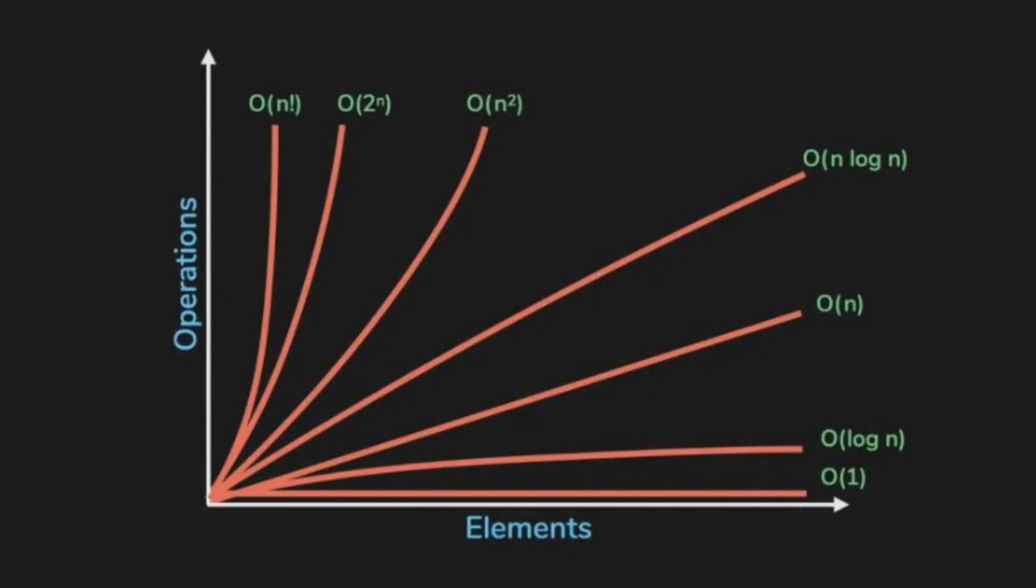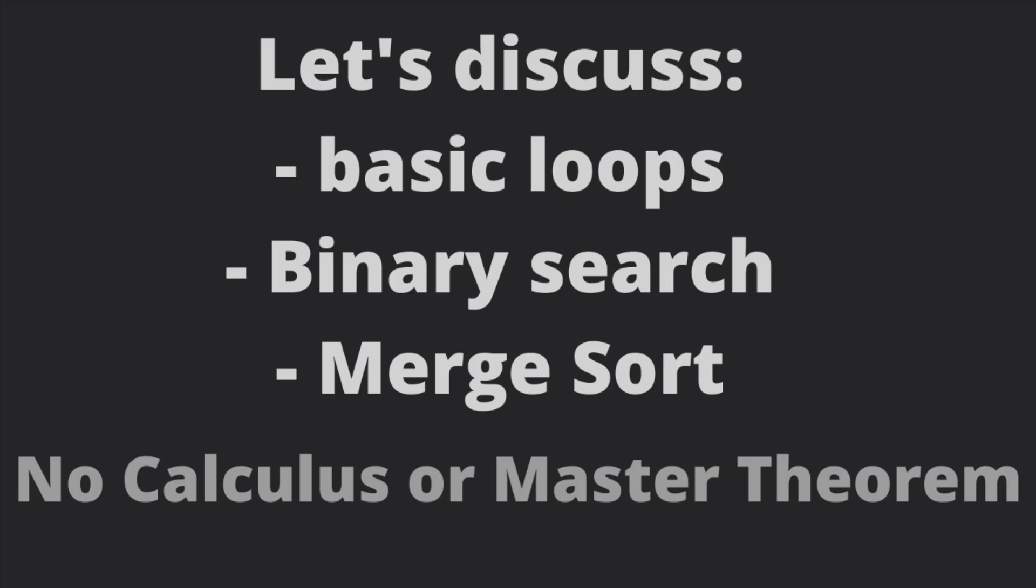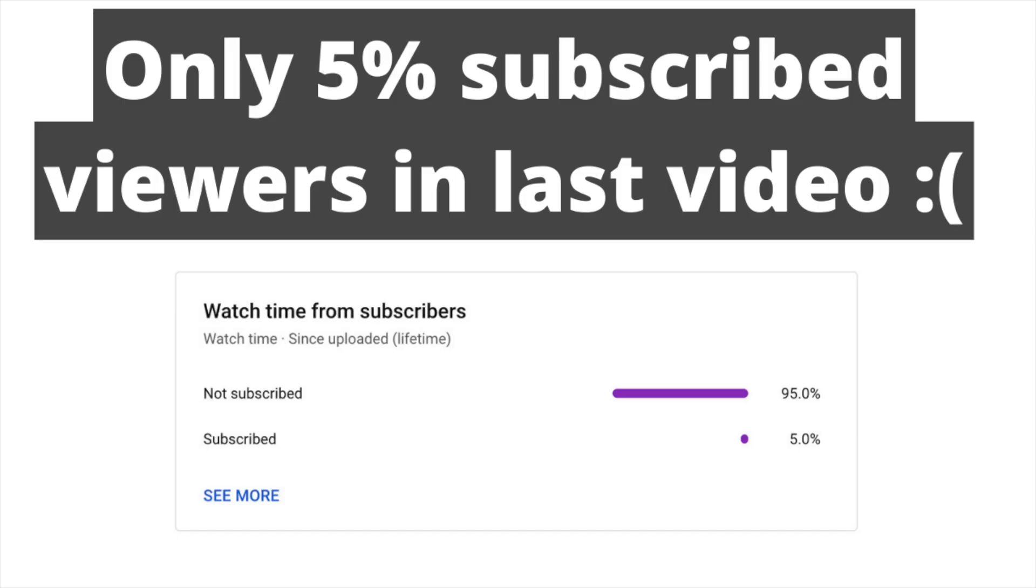This graph shows how fast the different time complexity grows. And as you can see, we have log n, then n, then n log n, and then n square is much bigger. And n factorial is just crazy. Now let's take some common scenarios and algorithms and see their time complexity, after which you will be able to figure out the time complexity of pretty much every code you will encounter. No calculus required. But before that, please make sure to subscribe. If you're still watching, you're probably finding it useful.